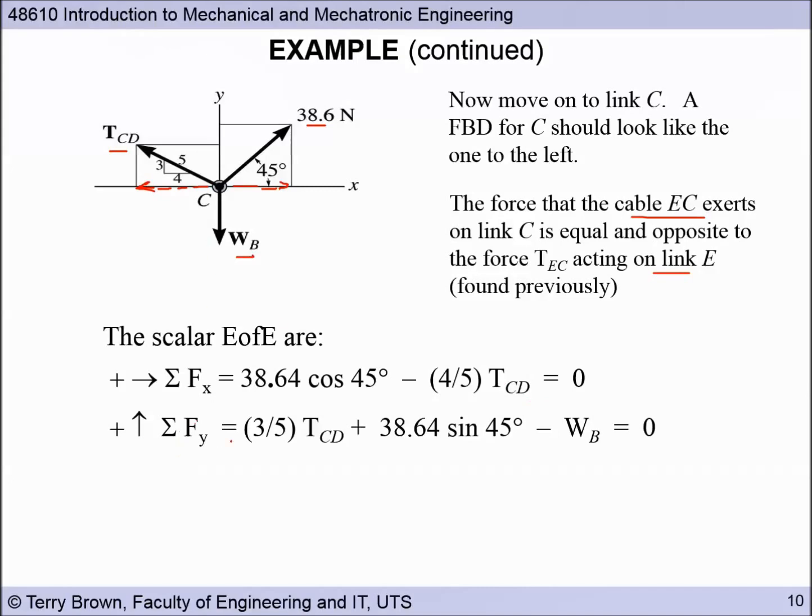Then in the y direction, we have, looking at TCD first, so we need the length of, so there's our component in the y direction for CD. So we need the length of that side. So from our three four five triangle, we have three fifths times TCD will give us the length of this side. That's in the positive direction. Plus the vertical component of our 38.6. So its component is in that direction like that. So we need the length of that side of our right angle triangle, which will be sine, so 38.64 sine 45, minus the weight of the sack, which is our unknown in this case.